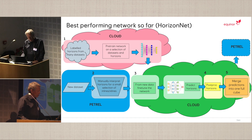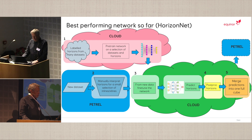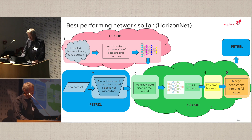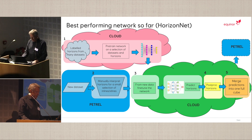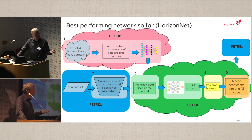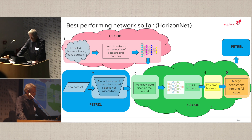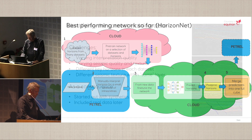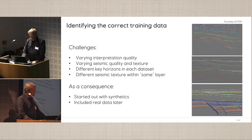This is how our method works today. We pre-trained a network by selecting some carefully chosen 3D volumes with interpretation. The volumes have been qualified, and within our target cube we interpret a small selection of lines — typically done in Petrel. We move the lines over to the cloud, fine-tune the pre-trained network, do our predictions, and apply some easy post-processing to get rid of all the noise, spikes, and so on, then return the results back to Petrel.